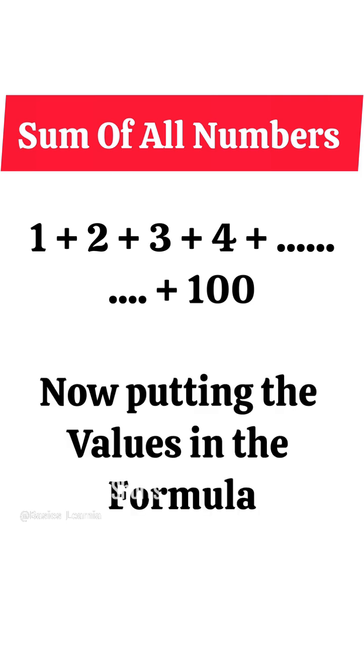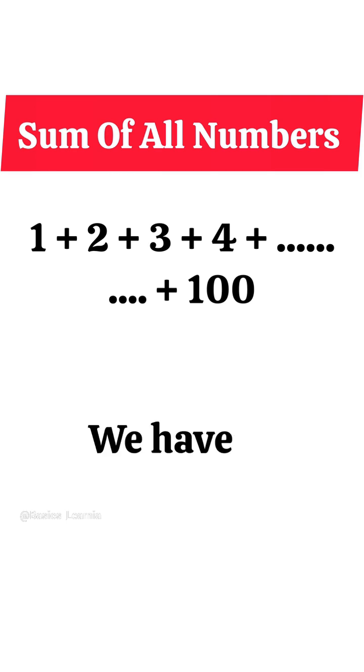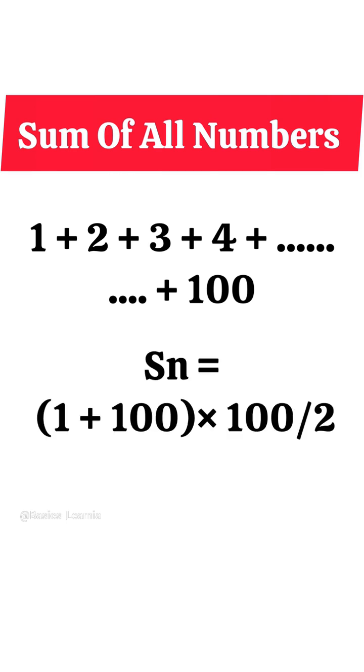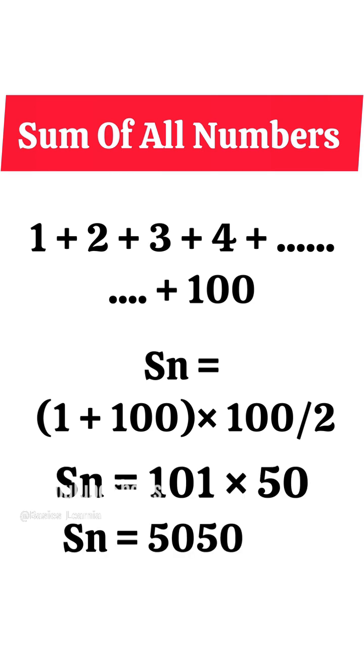Now putting the values in the formula, we have Sn is equal to 1 plus 100 into 100 divide by 2. Sn is equal to 101 multiplied by 50. Sn is equal to 5050.